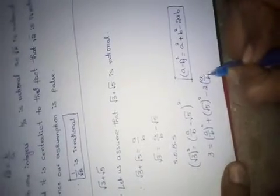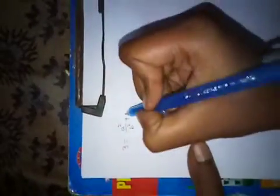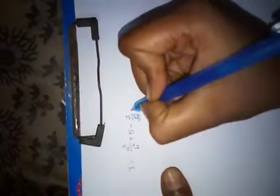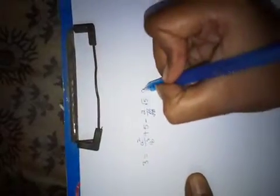This means: a by b squared plus 5 minus 2 into root 5 into a by b. So 3 equals a squared by b squared plus 5 minus 2 root 5 times a by b. Therefore a squared by b squared plus 5 minus 2 into root 5 into a by b.